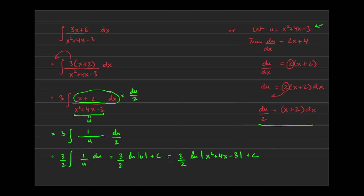Maybe use a different color for that approach. I would have still factored out the 3 and get x plus 2 in the numerator and then x squared plus 4x minus 3 in the denominator. I'm still integrating with respect to x. Now, I ask myself, what is the derivative of the denominator? The derivative of the denominator is 2x plus 4. That's the numerator multiplied by 2.